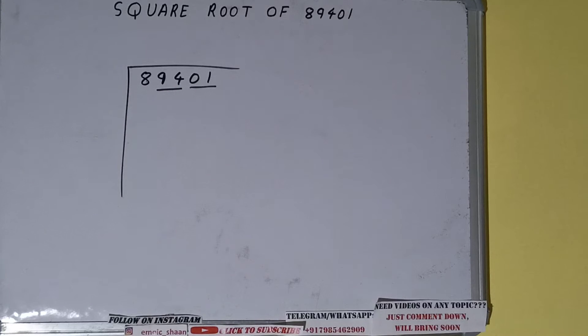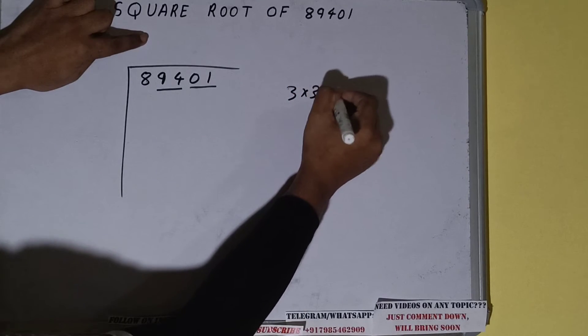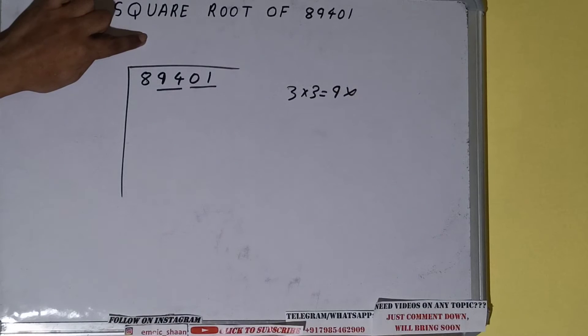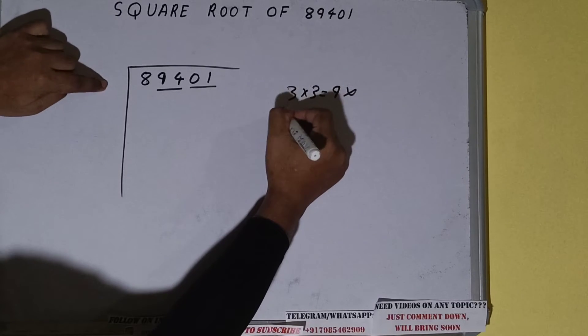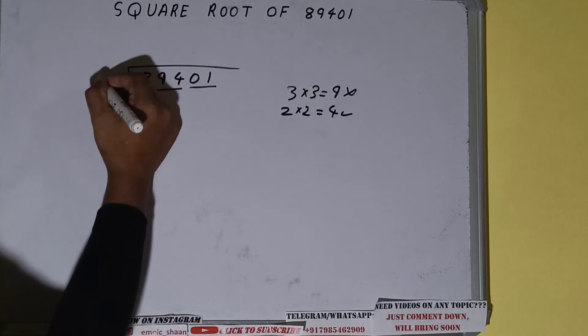The rule is whatever number we write here, we have to write here also. So if we write 3 here and 3 here, we'll be getting 9 which is greater than 8, so we cannot use it. If we write 2 here and 2 here, we'll be getting 4 which is good to use. So 2 here and 2 here.